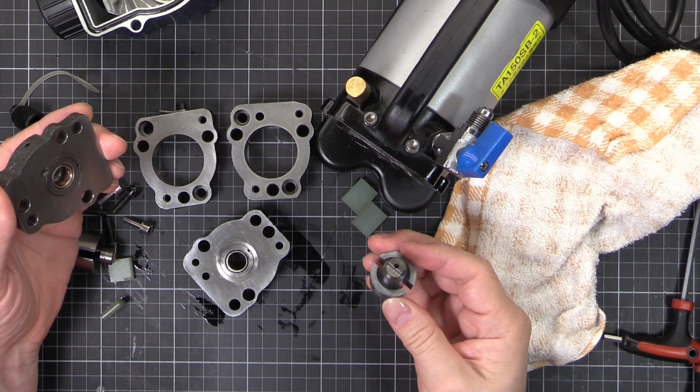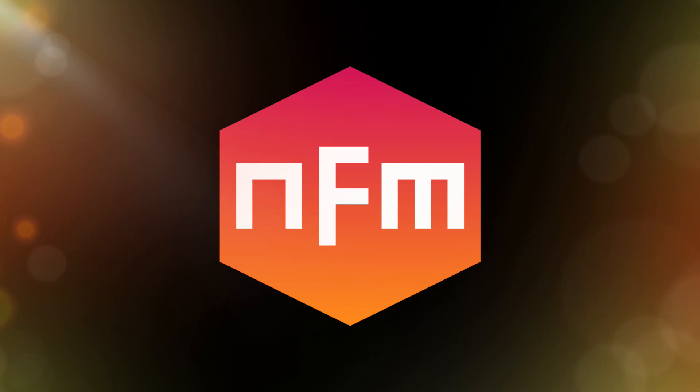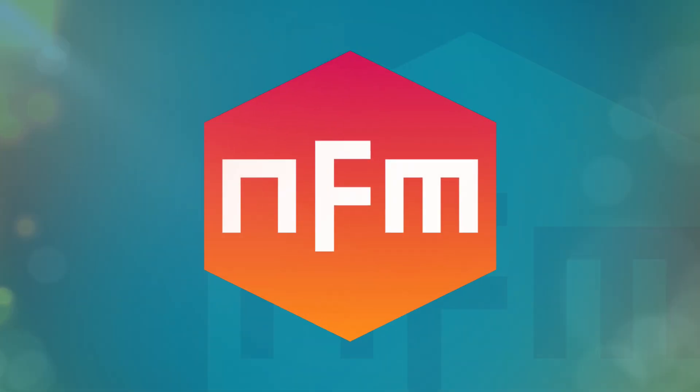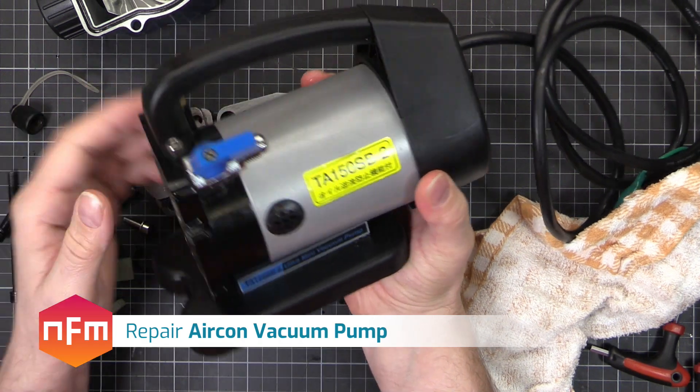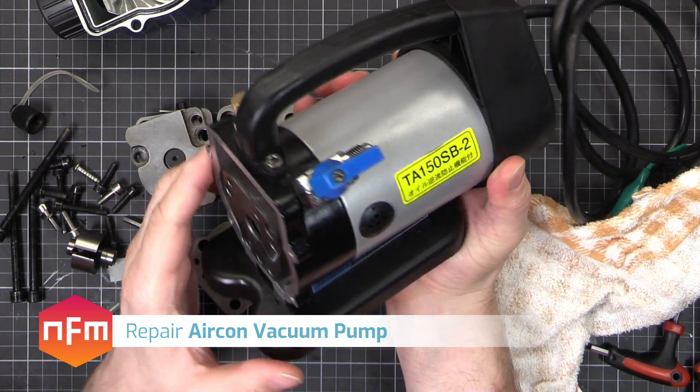What have I done? Somebody send help. So I've got this air conditioning vacuum pump. Use it for sucking the air out of the pipes when you're installing an air conditioner.